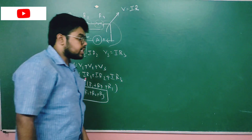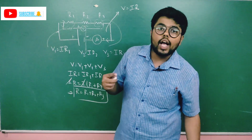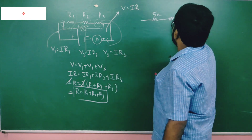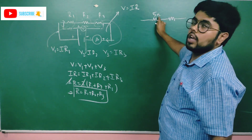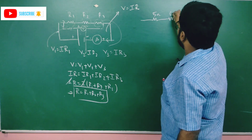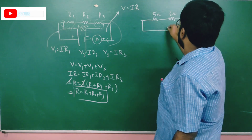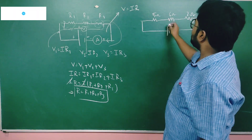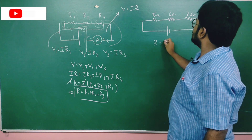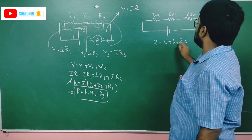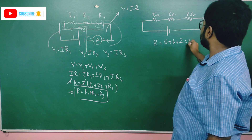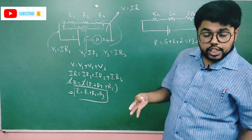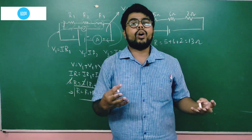What is the resistance of a series connection? Here is a problem: it is 5 Ohms, 6 Ohms, and 2 Ohms. Total resistance is 5 plus 6 plus 2 — this is 11 plus 2 equals 13 Ohms. So 13 Ohms is offered in this circuit. The total resistance is an addition.